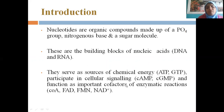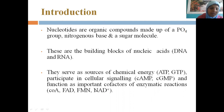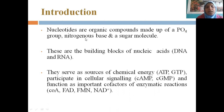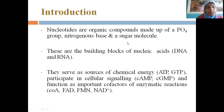Nucleotides are also important cofactors of enzymatic reactions like coenzyme A, FAD, and FMN. If it is one nucleotide, it is called a mononucleotide; if two, a dinucleotide. NAD, adenosine dinucleotide, FMN flavin mononucleotide, FAD flavin adenine dinucleotide, and coenzyme A all show the composition of nucleotides — a combination of phosphate, nitrogen base (adenine, guanine, thymine, cytosine, or uracil), and a sugar molecule, either deoxyribose or ribose.